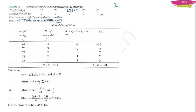Now we find the deviation di = xi − 72 for each value: 67 − 72 = −5, 70 − 72 = −2, 72 − 72 = 0, 73 − 72 = 1, 75 − 72 = 3. Summation(fi) = 4 + 3 + 2 + 2 + 1 = 12.